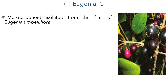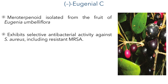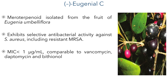Eugenial C is a meroterpenoid isolated from the fruit of Eugenia and Bella Flora. It shows selective antibacterial activity against Staphylococcus aureus, including a resistant MRSA strain, with a minimum inhibitory concentration of less than 1 microgram per mL, which is a similar activity to vancomycin, daptomycin, and bithionol.